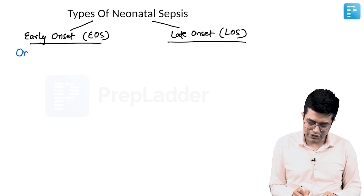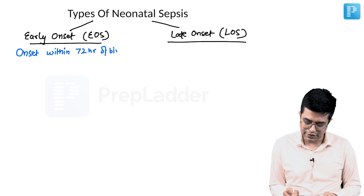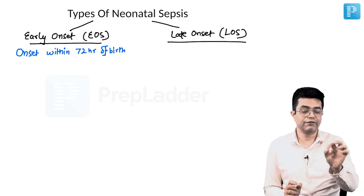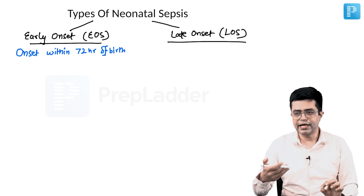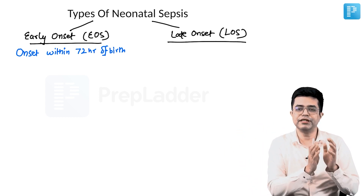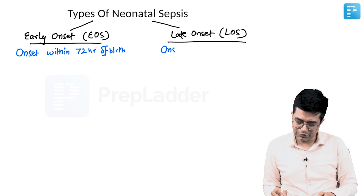Early onset sepsis is when the onset of signs and symptoms occurs within 72 hours of birth. The first sign and symptom should appear within 72 hours — it can continue for many days, but the first presentation must be within 72 hours. When onset occurs beyond 72 hours of birth, that is late onset sepsis.